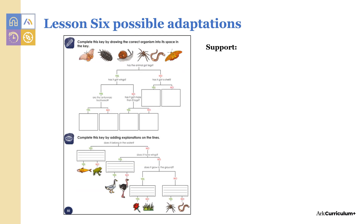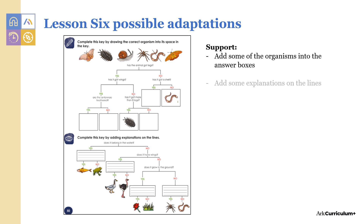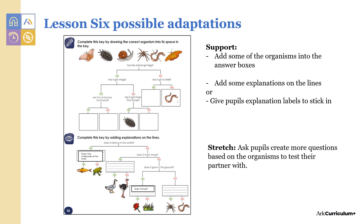To support pupils in lesson six activities, add some of the organisms into the answer boxes, add some explanations over the lines, or give pupils explanation labels to stick in. Stretch pupils by asking them to create more questions based on the organisms to test their partner with.